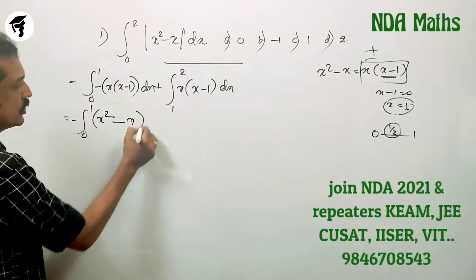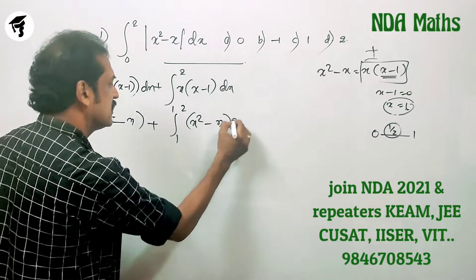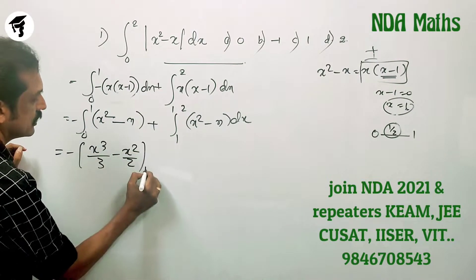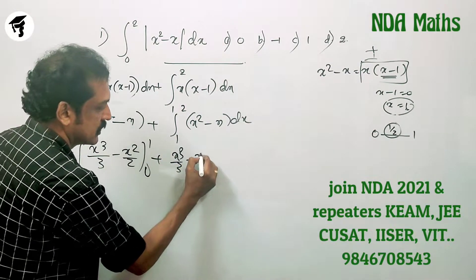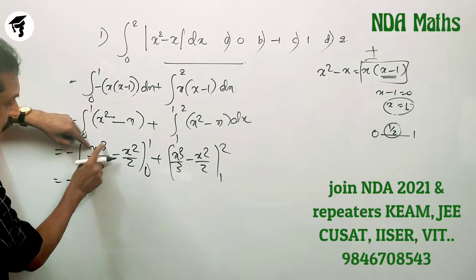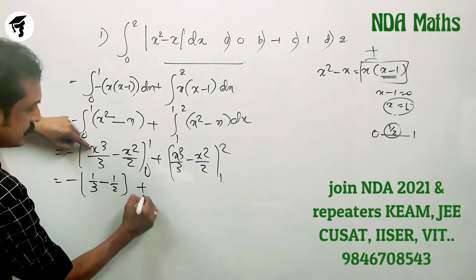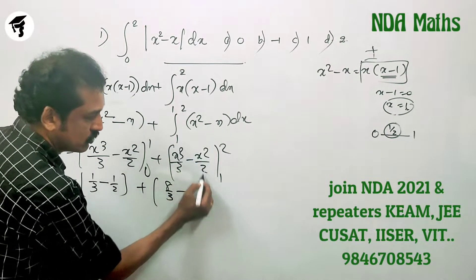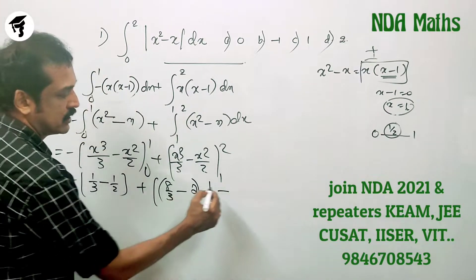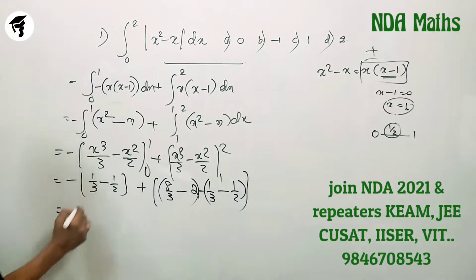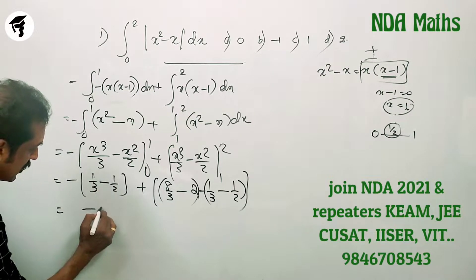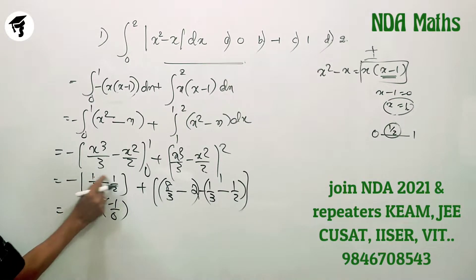So we write: minus of integral 0 to 1 of (x² minus x) dx, plus integral 1 to 2 of (x² minus x) dx. This gives minus of [x³/3 minus x²/2] from 0 to 1, plus [x³/3 minus x²/2] from 1 to 2. Applying limits: minus of (1/3 minus 1/2), plus (8/3 minus 4/2) minus (1/3 minus 1/2). That is minus of (2 minus 3)/6, which is minus of (minus 1/6), giving 1/6.